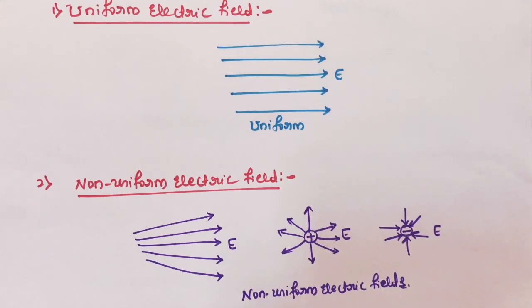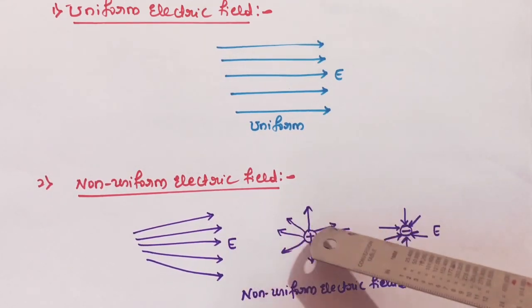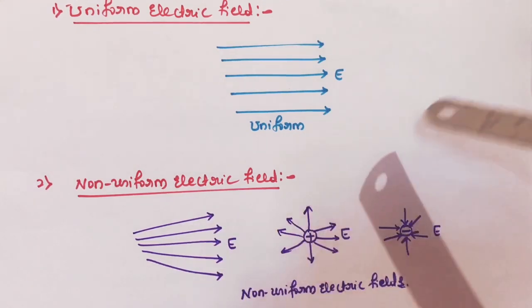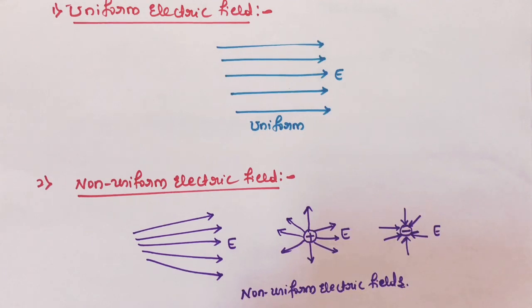The second type is non-uniform electric field, where the electric field is not distributed equally. Non-uniform electric field means if the force on a test charge varies from point to point in an electric field in magnitude, direction, or both, then the field is said to be non-uniform. These are the two types of electric field.